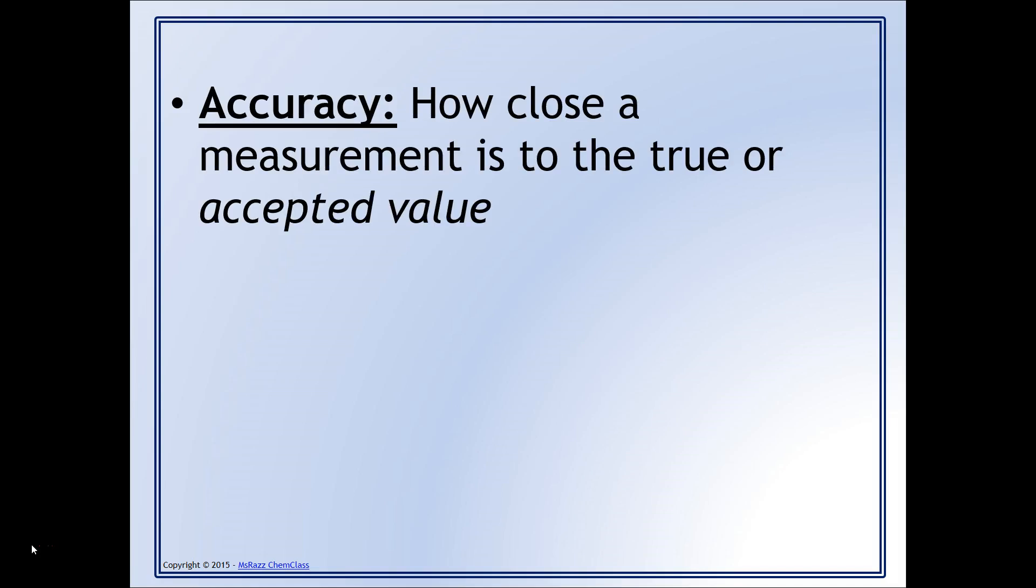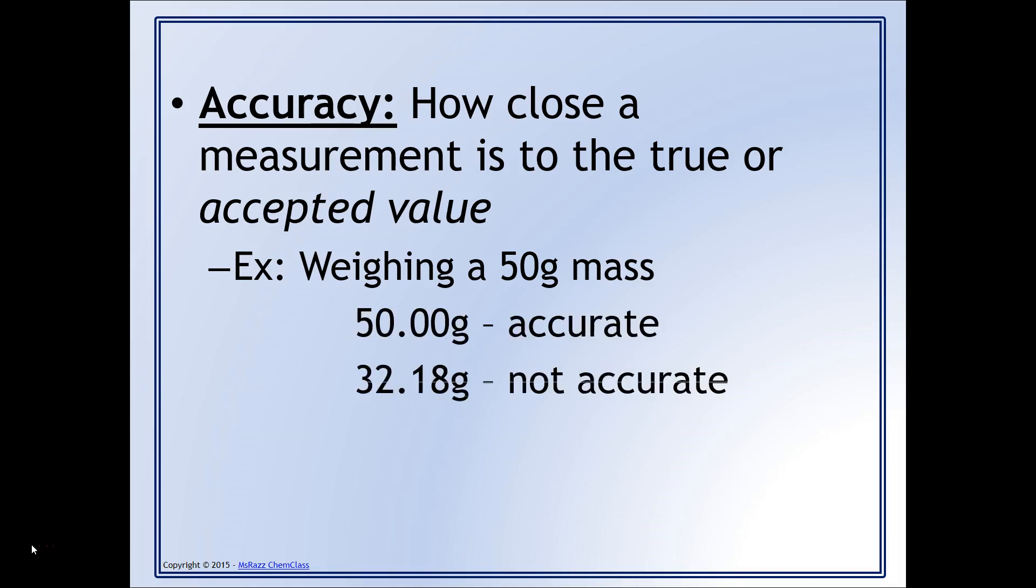Accuracy is how close a measurement is to the true or accepted value. For example, if you have a 50 gram mass and you put it on the balance three times and you get the following data, 50 grams would be accurate. If you got a mass of 32.18 grams, that would not be considered accurate because it's not close to the true value.